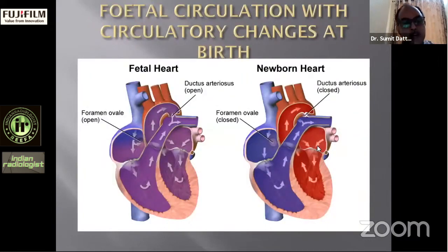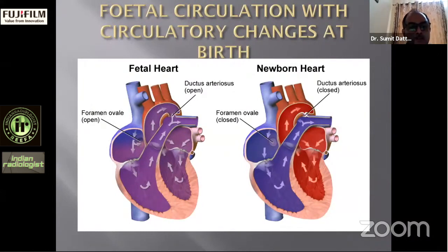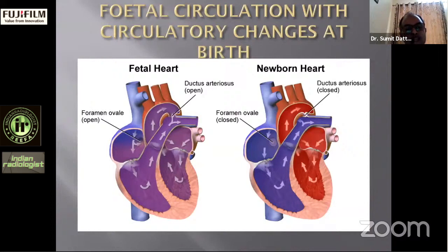Before birth, in the neonatal period, deoxygenated blood is carried by the two umbilical arteries to the placenta for oxygenation. The oxygenated blood from the placenta is carried by a single large umbilical vein through the ductus venosus, which shunts blood into two circuits: the inferior vena cava circuit and the portal venous circuit. From the portal venous system, blood enters the inferior vena cava through the hepatic veins.